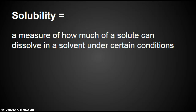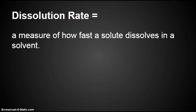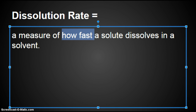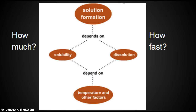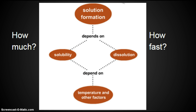Our second word for this lesson is solubility. Solubility is a measure of how much of a solute can dissolve in a solvent under certain conditions. The key thing here is how much. Solubility is how much can dissolve; dissolution rate is how fast. Solution formation depends on solubility — how much — and on dissolution — how fast. And how fast and how much depends on temperature and other factors.